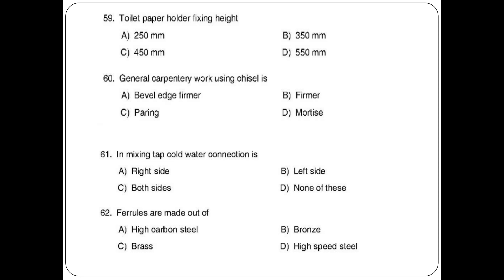Toilet paper holder fixing height — options: 250 mm, 350 mm, 450 mm, 550 mm. The answer is option C: 450 mm. General carpentry work using chisel — options: bevel edge, firmer, paring, mortise. The answer is option B: firmer chisel. In a mixing tap, cold water connection is on the right side.